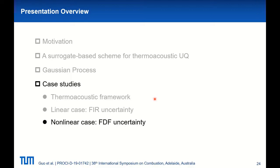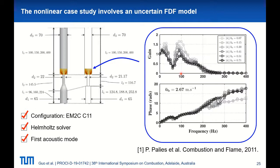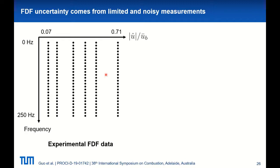Now let's see the nonlinear case. We are still using the same GP models we trained earlier — this is one of the benefits of the proposed scheme: we can use the same GP models to solve multiple problems. Everything is the same as the linear case, except now we are using a FDF model. This is the measured data of FDF.